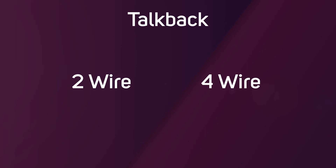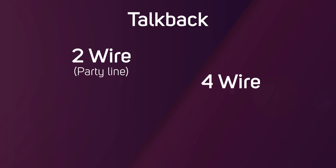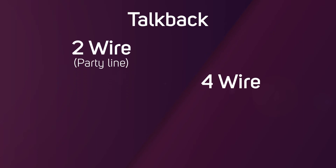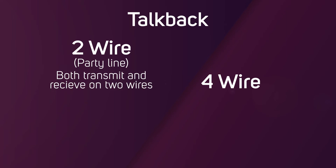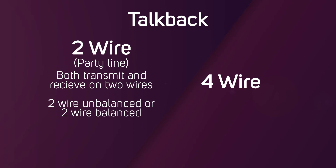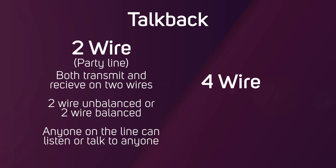In two-wire systems, also referred to as party line systems, they have both transmit and receive on two wires. These can be two-wire unbalanced or two-wire balanced. The simplicity of this design allows for anyone on the line to listen and talk to anyone else.